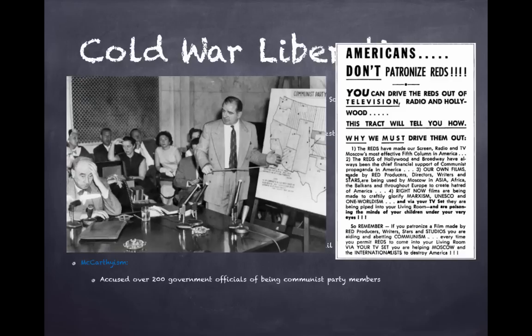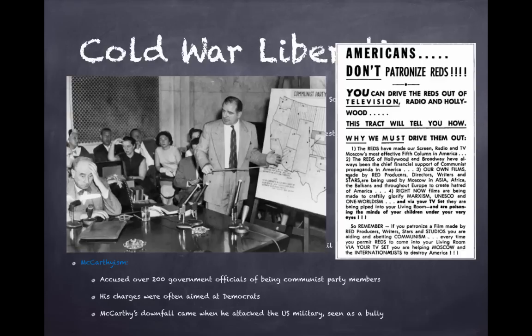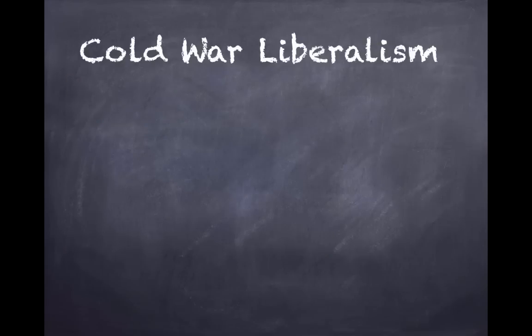Joseph McCarthy accused over 200 government officials — mostly Democrats — of being communist party members. McCarthy was a Republican senator. His downfall came when he attacked the US military on television, was seen as a bully, and died shortly after.